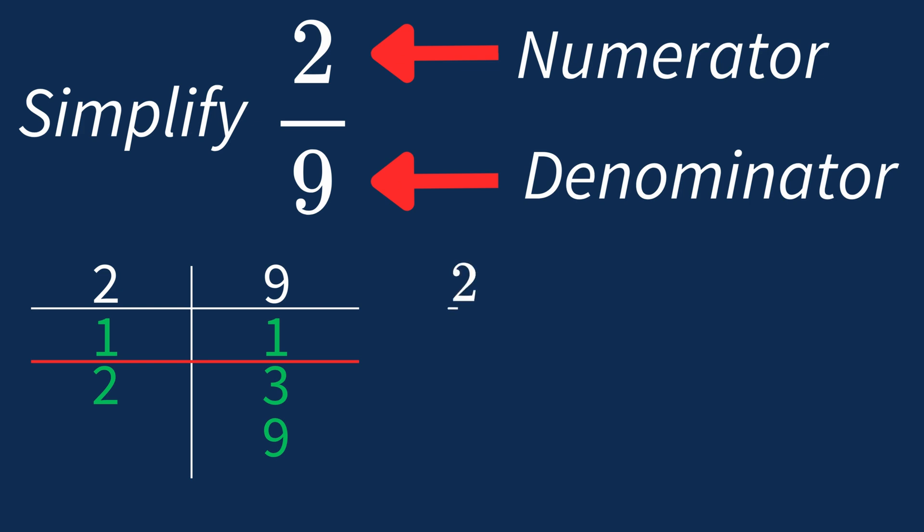Dividing the numerator 2 by 1 gives us 2. Dividing the denominator 9 by 1 gives us 9. So after dividing both the numerator and denominator by their greatest common factor of 1, we end up with the same fraction, 2 over 9.